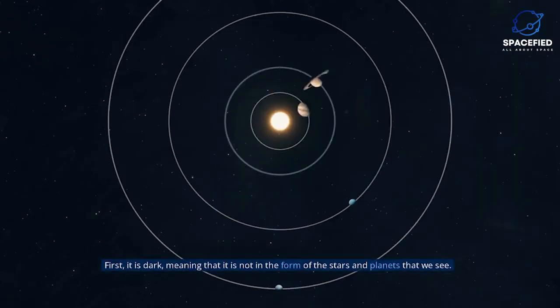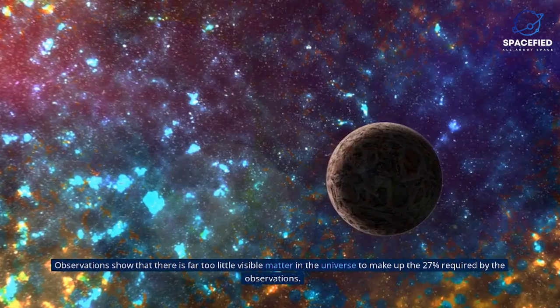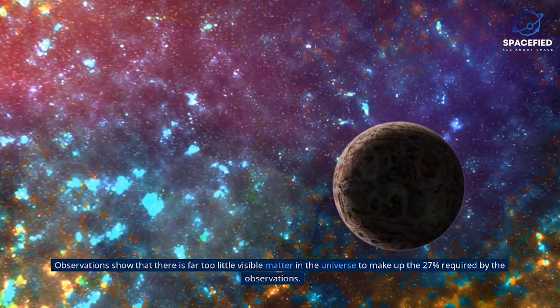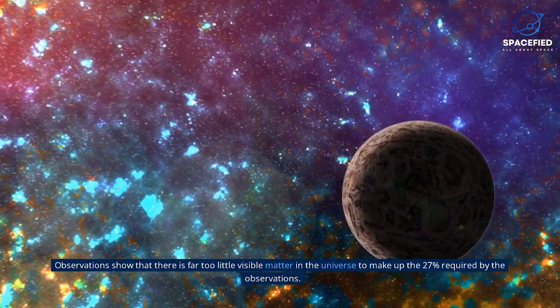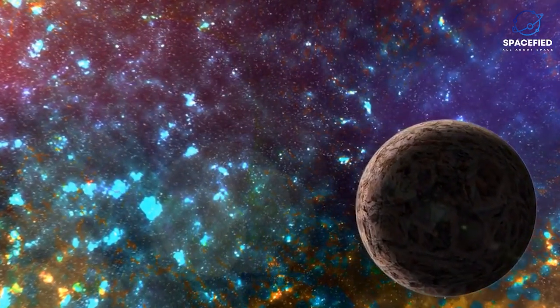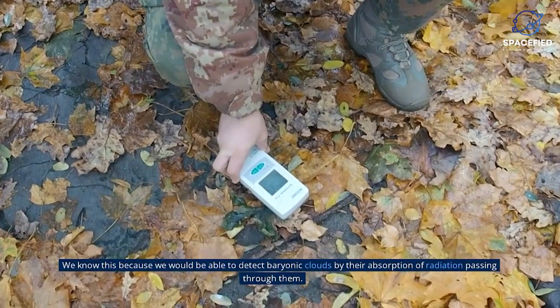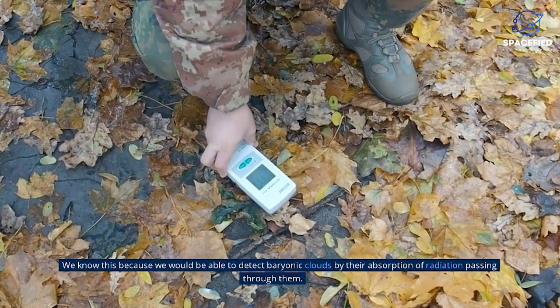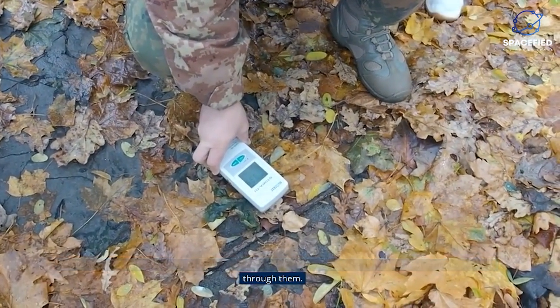First, it is dark, meaning that it is not in the form of the stars and planets that we see. Observations show that there is far too little visible matter in the universe to make up the 27% required by the observations. Second, it is not in the form of dark clouds of normal matter, matter made up of particles called baryons. We know this because we would be able to detect baryonic clouds by their absorption of radiation passing through them.